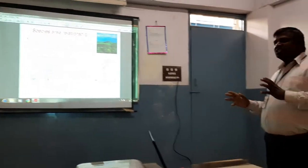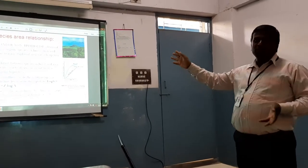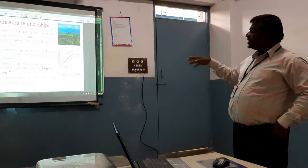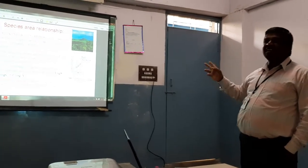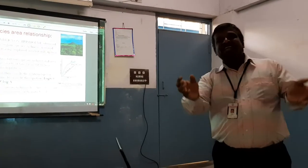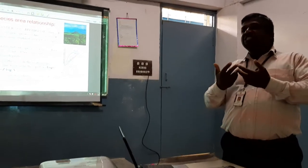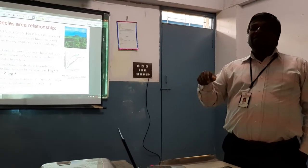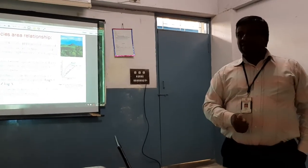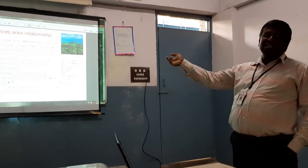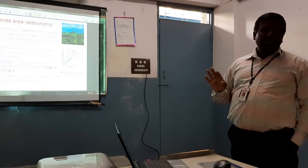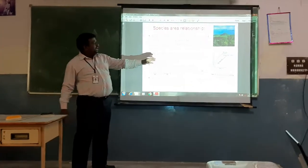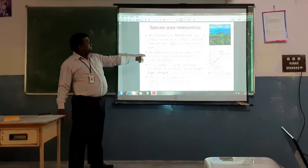Now, species-area relationship — they have a graph which may be asked in exams. This was put forth by Alexander von Humboldt, a plant scientist and ecologist. Species richness within a given area — within the Amazonian rainforest, species richness will be much more than in a desert or polar regions. Species richness increases with increased explored area, but only up to a limit. Mathematically, a rectangular hyperbola was found between species richness and area for a wide variety of taxa.